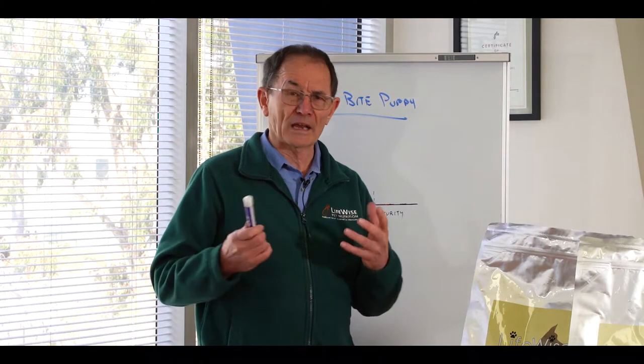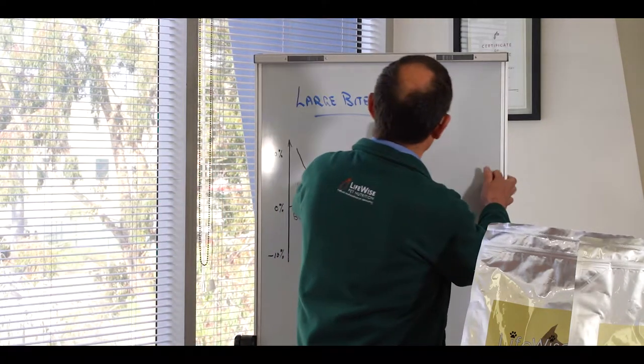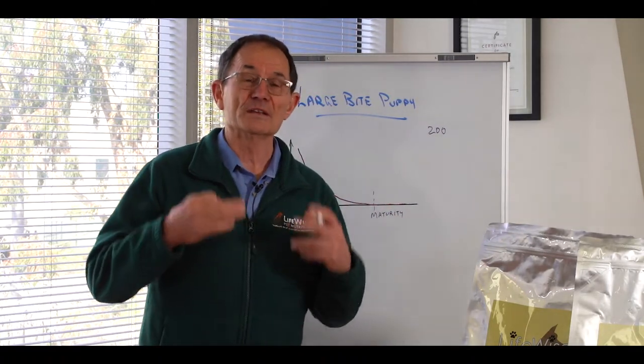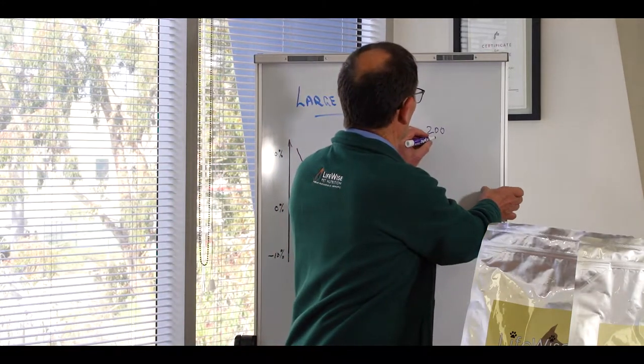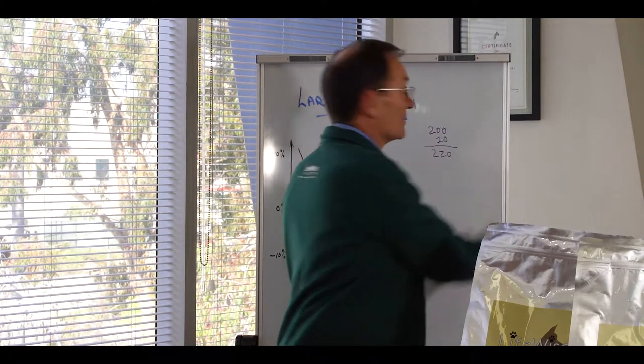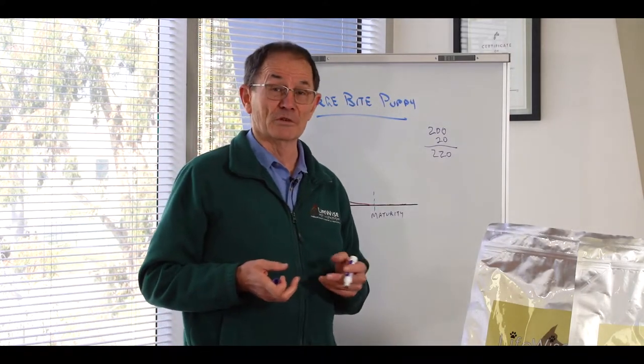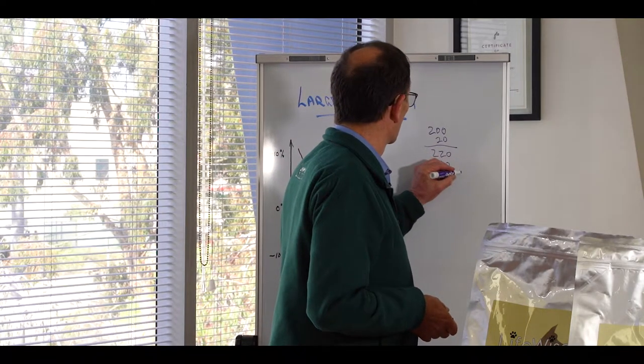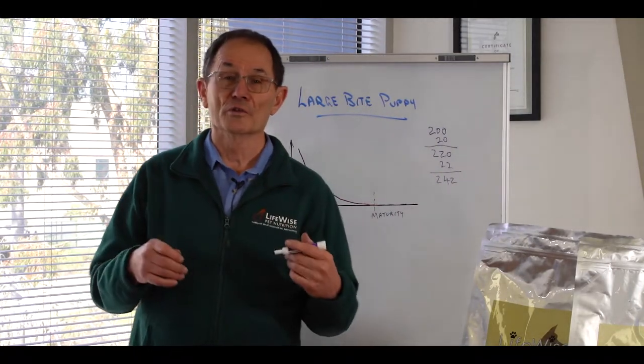So what that actually means is if we had a little baby pup and he weighed 200 grams and our 200 gram pup was growing at 10% of his body weight per day he would be putting on today 20 grams. Which means tomorrow he would weigh 220 grams. If he continued to grow at 10% of his body weight each day he'd put on 22 grams on that day. So the next day he'd be 242 grams and so it goes on.